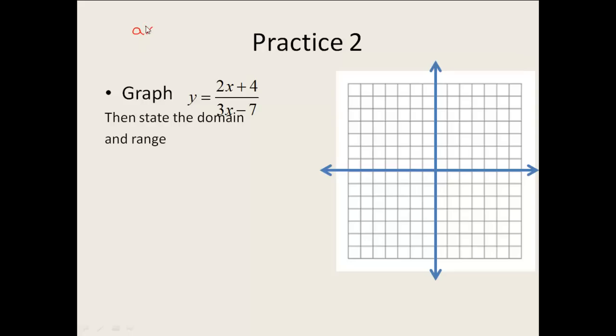Well, this one looks more like the AX plus B divided by CX plus D. Once you get that decision made, then you can kind of go back to the rules.